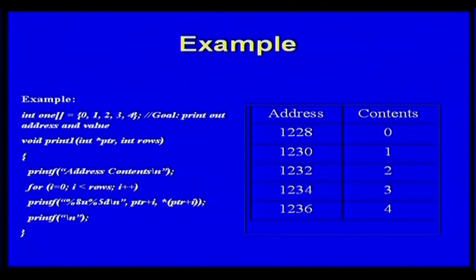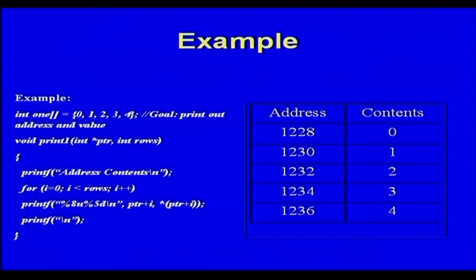For example, let us assume that the array consists of indices 0, 1, 2, 3, 4. We are assuming that two address locations are used to represent one element of the array. So address 1228 contains element 0, index 1 contains element 1, and so on — these are the contiguous memory locations that are allocated.